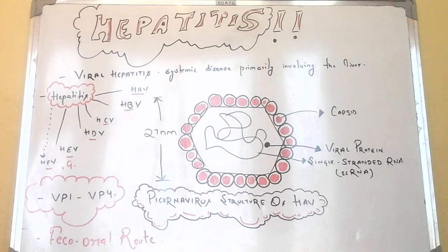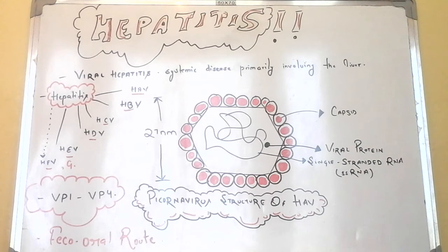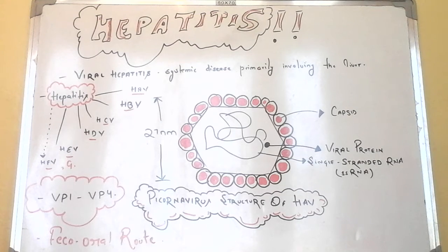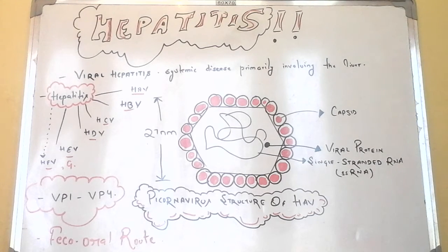The etiological agent for Hepatitis A is transmitted through the feco-oral route via contaminated water, food, dirty hands, and shellfish — especially clams, oysters, and mussels — which are important sources of the virus. HAV outbreaks usually originate from a common source such as a water supply, restaurant, or daycare center.